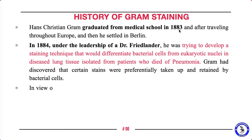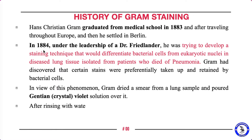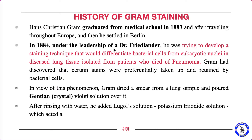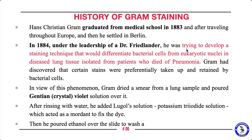This is a photograph of Hans Christian Gram, who developed this technique. He was a Danish physician who developed gram staining in 1884. After graduating from medical school in 1883, he traveled through Europe and settled in Berlin in 1884, where he joined under the leadership of Dr. Friedlander. At that time, Dr. Friedlander was trying to develop a staining technique to differentiate bacterial cells from eukaryotic nuclei, and he worked with lung tissue taken from patients who died of pneumonia.